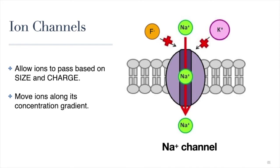The way that ion channels control movement based on charge is quite simple. Ion channels are made of proteins, and if you remember from our lesson on proteins, proteins are made of amino acids, and some amino acids have charged R groups. The amino acids found within the inside layer of the channel proteins are charged amino acids. More specifically, they have charges that are opposite to that of the ion they're meant to transport. In this case, the inner layers of a sodium channel are made up of negatively charged amino acids. These negatively charged amino acids attract the positively charged sodium ions and repel any negatively charged ions that try to cross the tunnel. So here we have another example of how protein structure can determine its function within the cell.